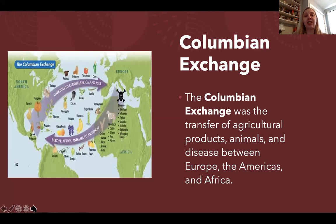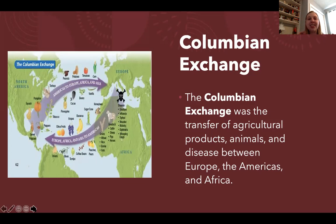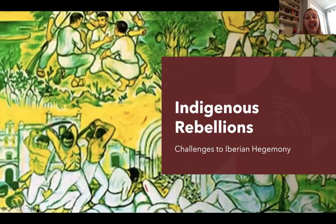Another source of environmental change is the Columbian Exchange — the transfer of agricultural products, animals, and disease between Europe, the Americas, and Africa as a result of the triangular trade system. Some surprising facts: bananas were not native to Latin America, and neither were coffee, sugarcane, or honeybees — all of which are now very important to economies in North and South America.